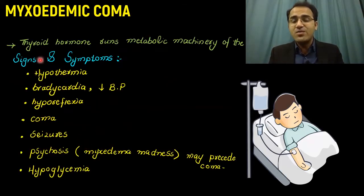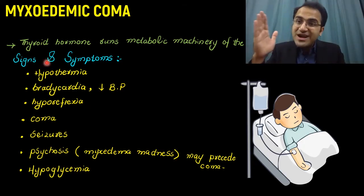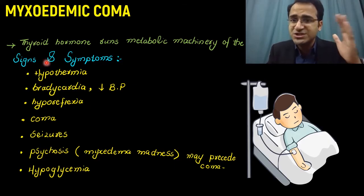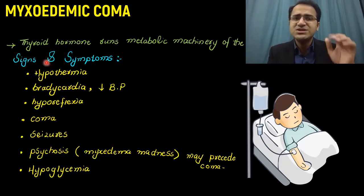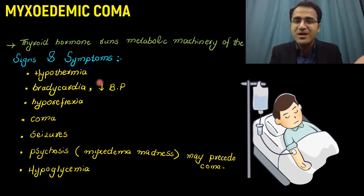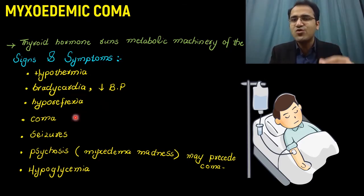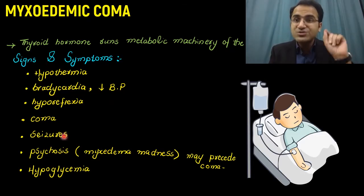Thyroid hormone runs the metabolic machinery of the body, and if thyroid hormone is deficient, the whole metabolic machinery shuts down — it collapses, as in myxedema coma. The body cannot maintain temperature; heat generation mechanisms are slowed down and there is hypothermia. There is bradycardia, the heart slows down, the vessels do not constrict causing hypotension, hyporeflexia, the brain shuts down resulting in coma, and sometimes you may also find seizures.